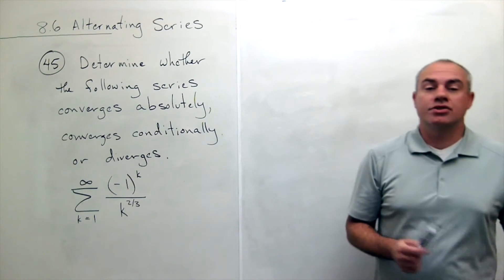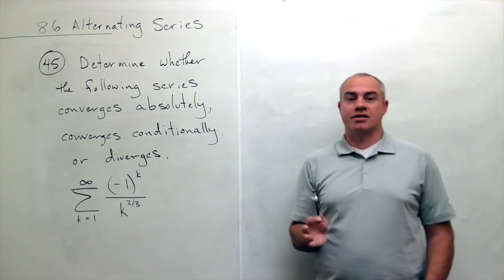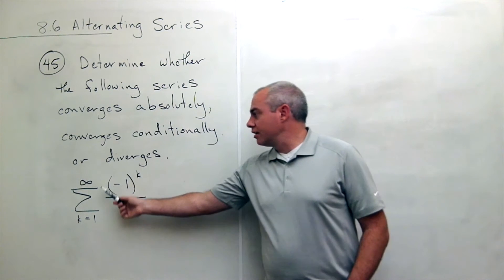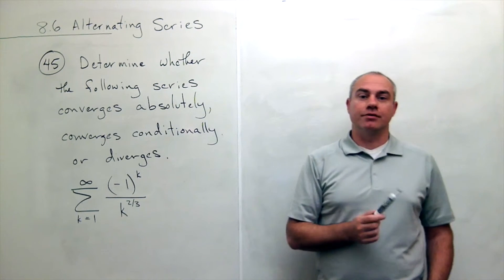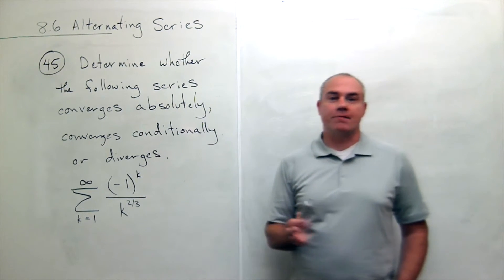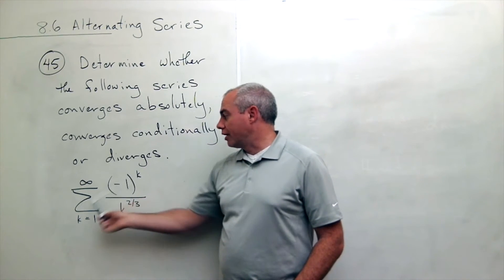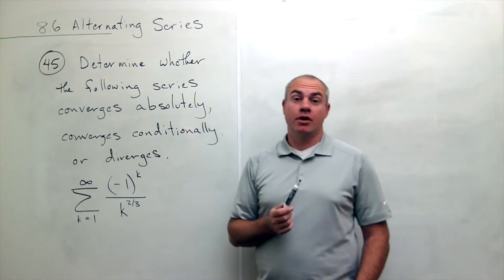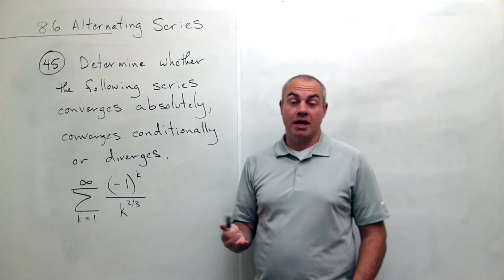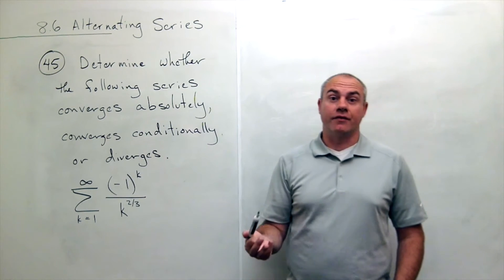So the first question I could ask is, does this thing converge absolutely? What I mean by converge absolutely is what if all of the negative signs were gone, but I was still summing it up, would it sum to something? And if it would, then it converges absolutely.